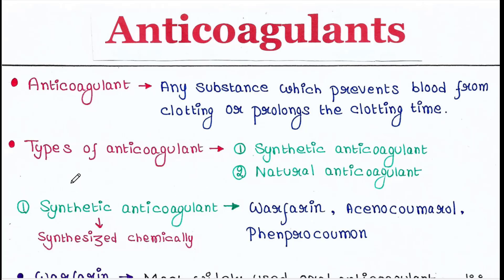Let's talk about types of anticoagulant. These are mainly of two types: synthetic anticoagulant and natural anticoagulant. Synthetic anticoagulants are synthesized chemically in the laboratory. Examples of synthetic anticoagulants are warfarin, acenocoumarol, and phenprocoumon.